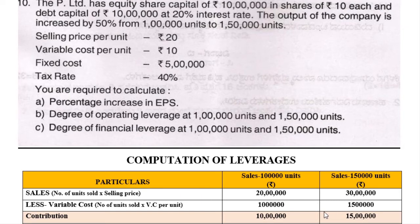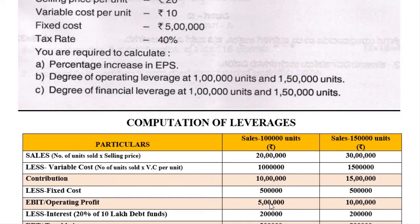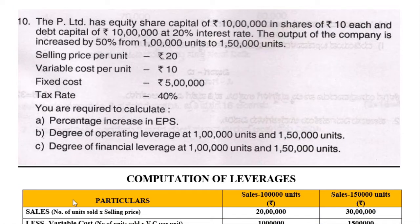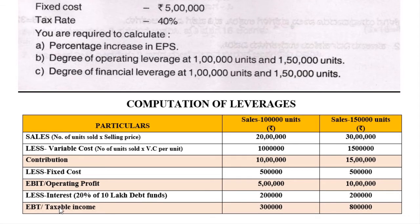Once you calculate the contribution, deduct fixed cost. Fixed cost is rupees 5 lakh and it remains the same in both cases. Case 1: 10 lakh minus 5 lakh gives EBIT of rupees 5 lakh. Case 2: 15 lakh minus 5 lakh gives EBIT of rupees 10 lakh. Next deduct interest — the debt capital debentures carry interest. Case 1: 5 lakh minus 2 lakh gives EBT of rupees 3 lakh. Case 2: 10 lakh minus 2 lakh gives EBT of rupees 8 lakh.